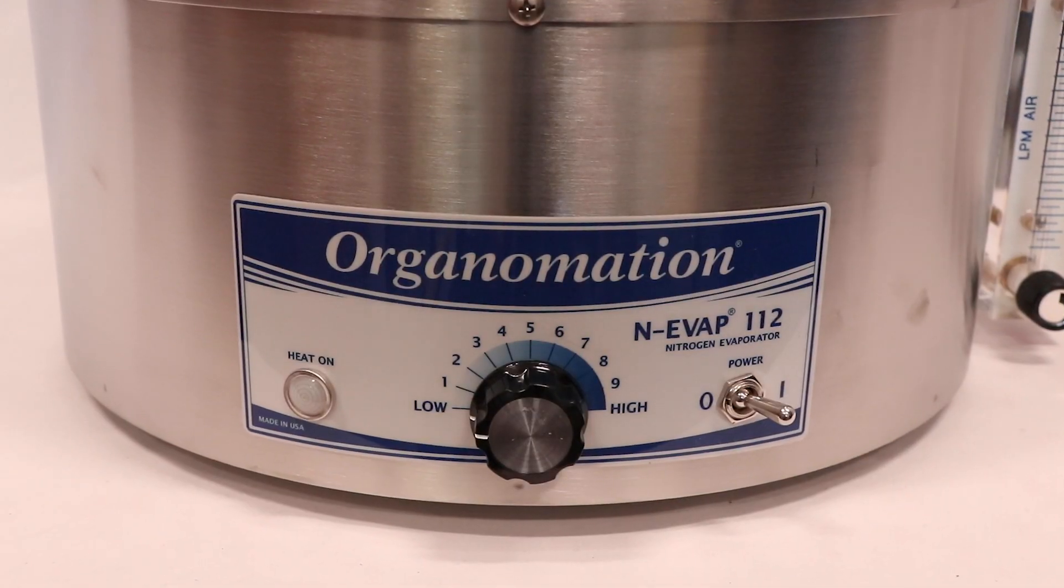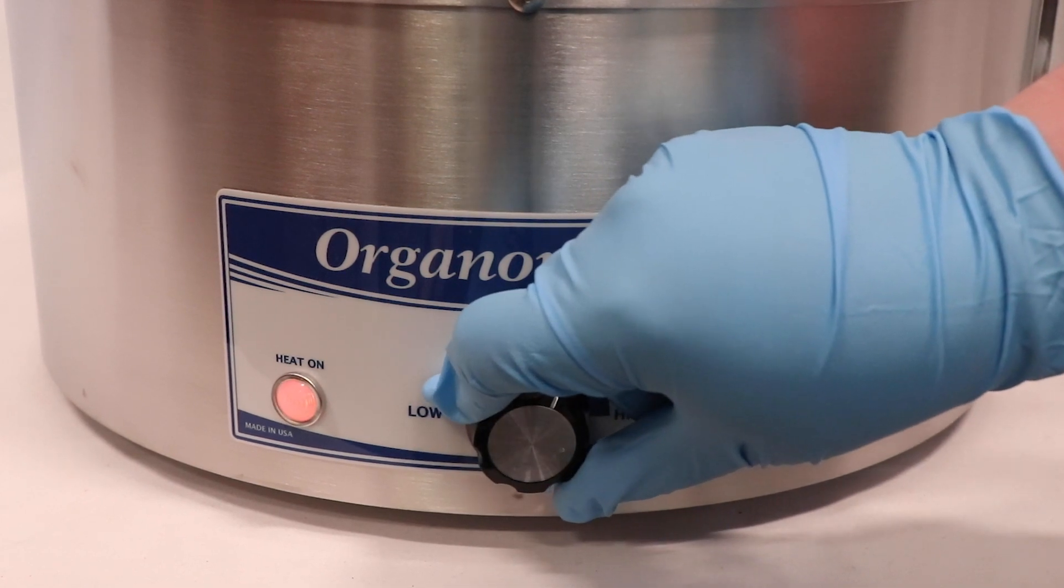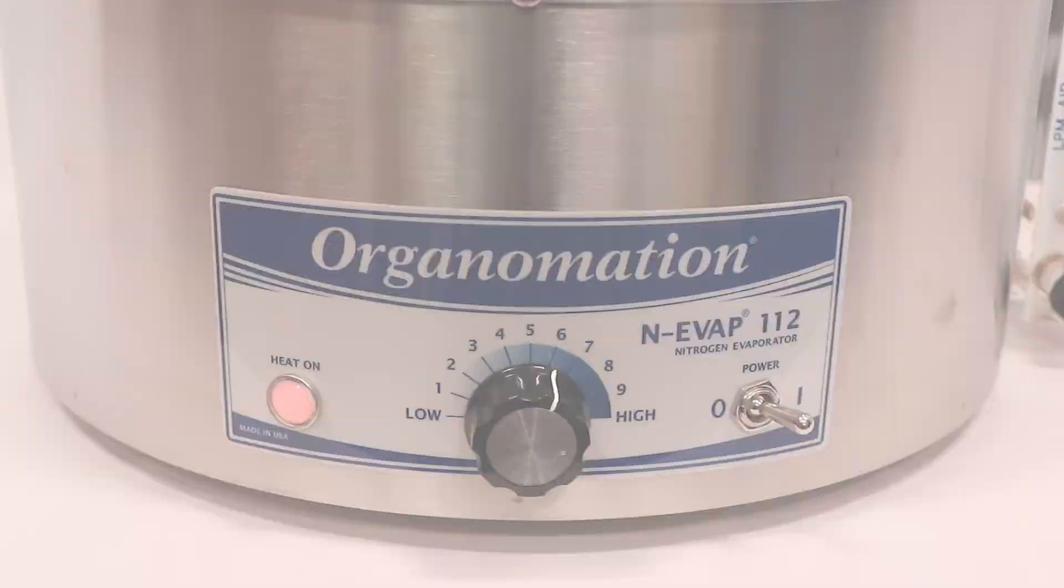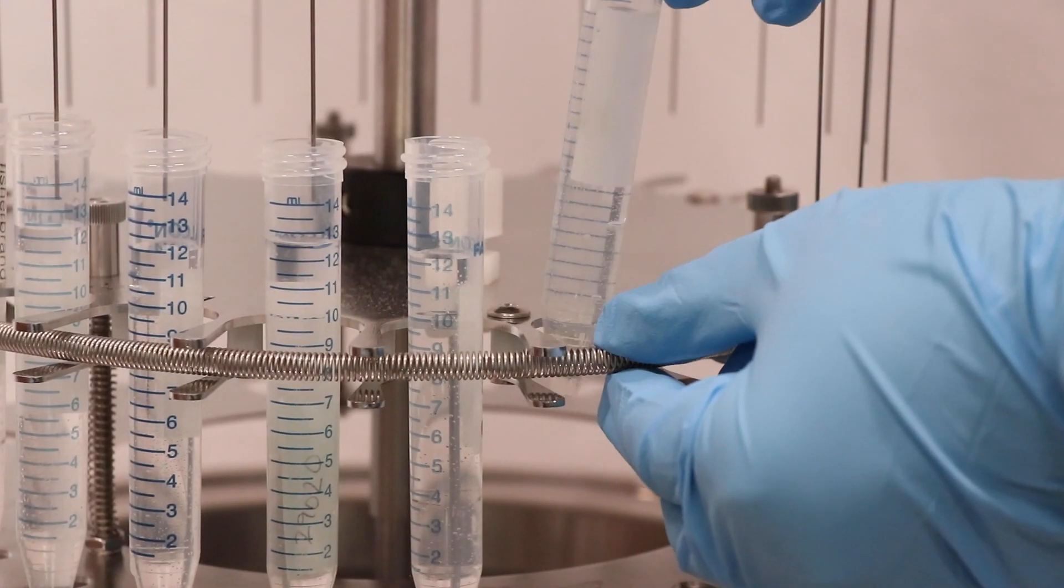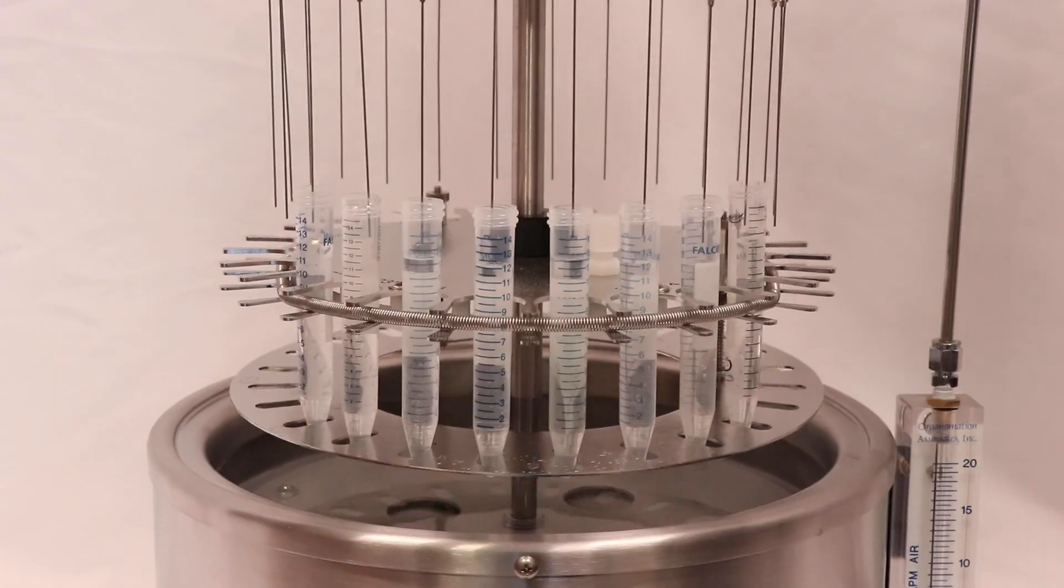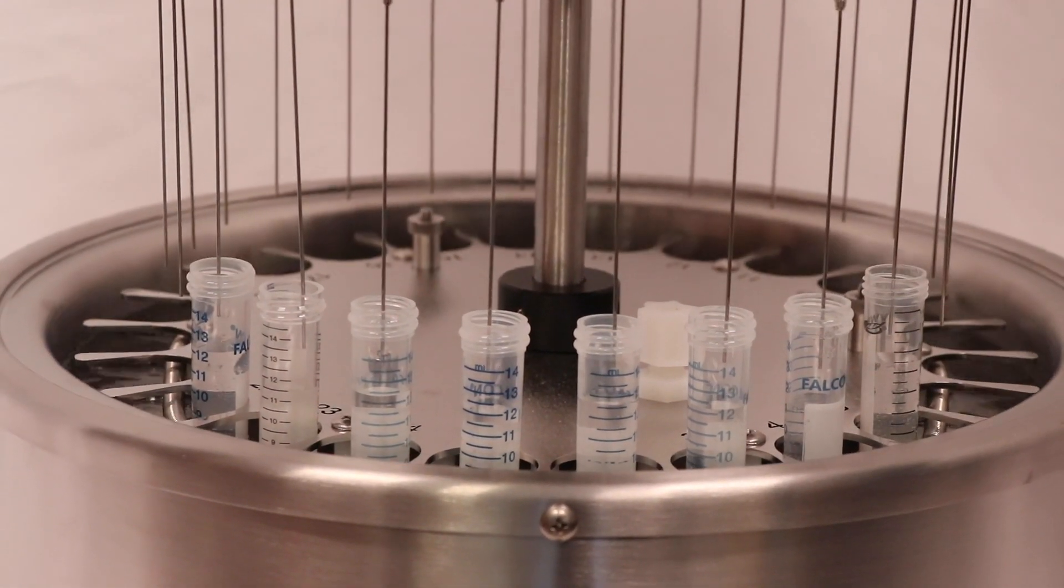Although nitrogen blowdown evaporation can be performed by hand, laboratories will often use a nitrogen evaporator to make the process more efficient. A lab technician will begin by placing their test samples into a nitrogen evaporator. They will then be lowered into a heated water bath which is set to a few degrees lower than the boiling point of the solvent you're working with.